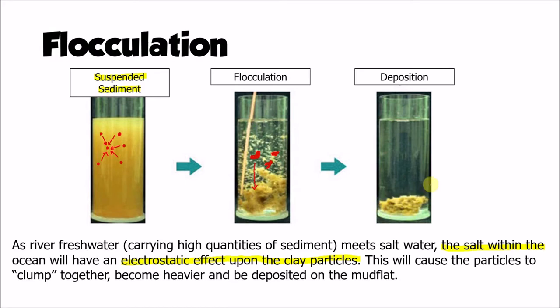Flocculation is a process used in lots of different industries, such as sewage treatment and the brewing industry. We can see how it separates out suspended sediment into clear water with all that sediment deposited at the bottom. This is happening naturally within the water in an estuary because of that interaction of salt water and fresh water.